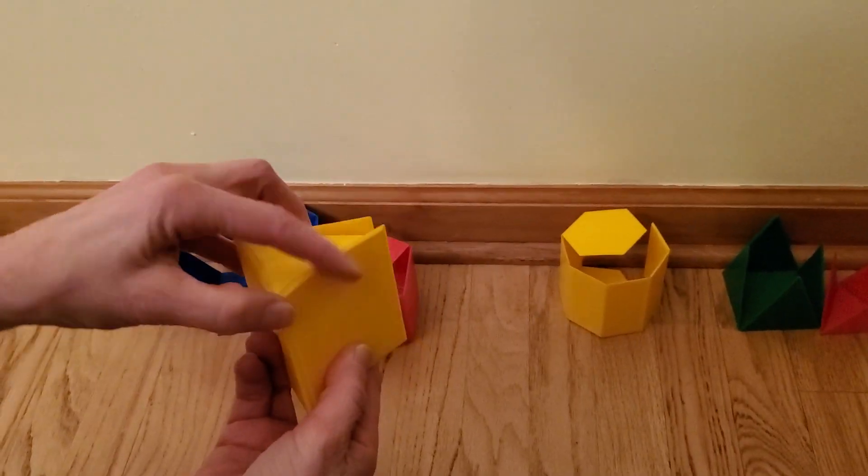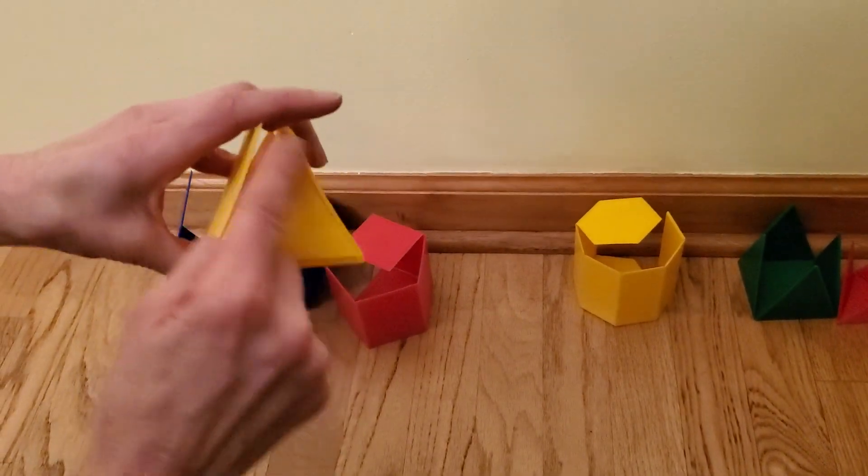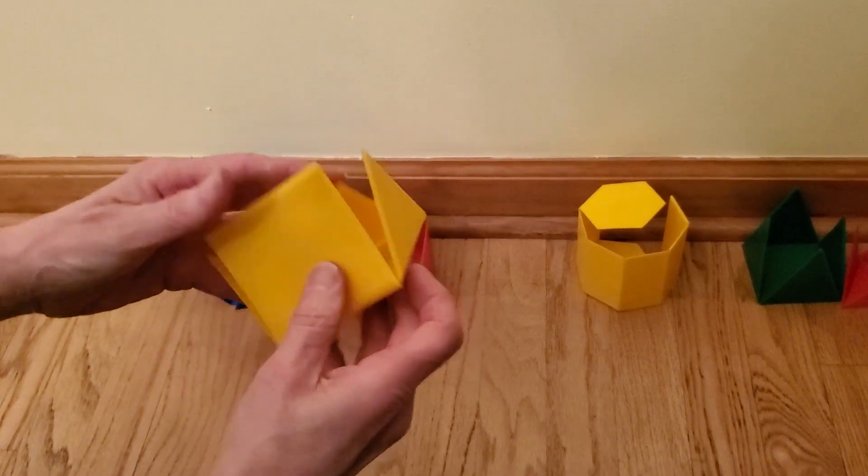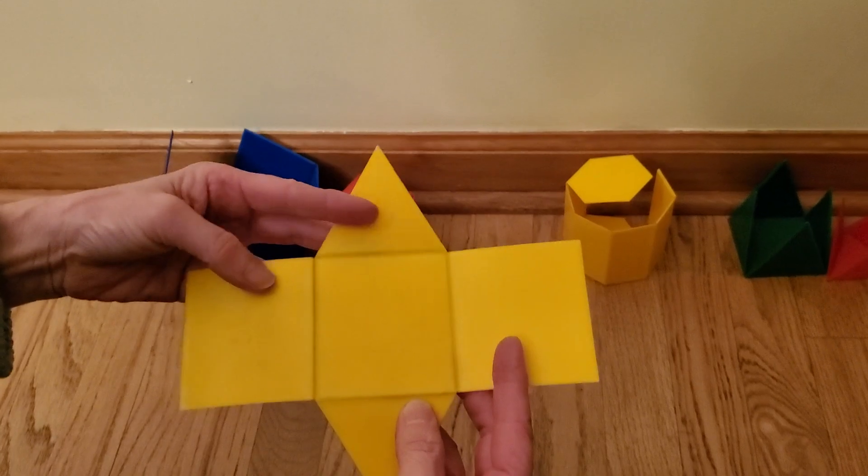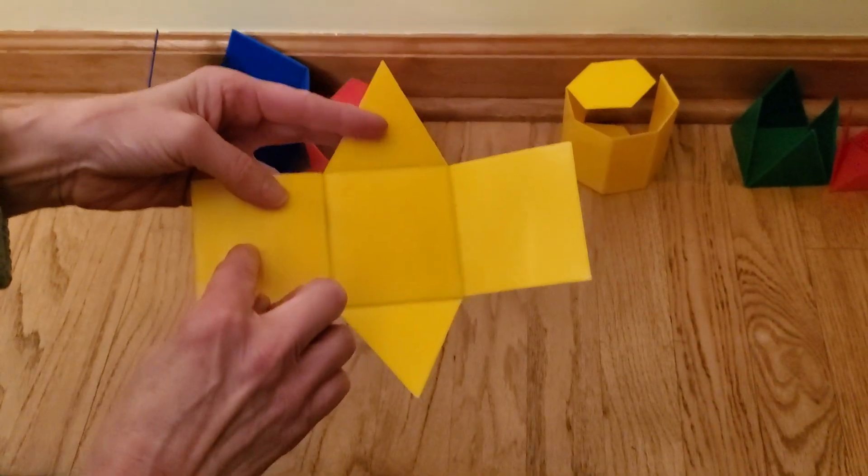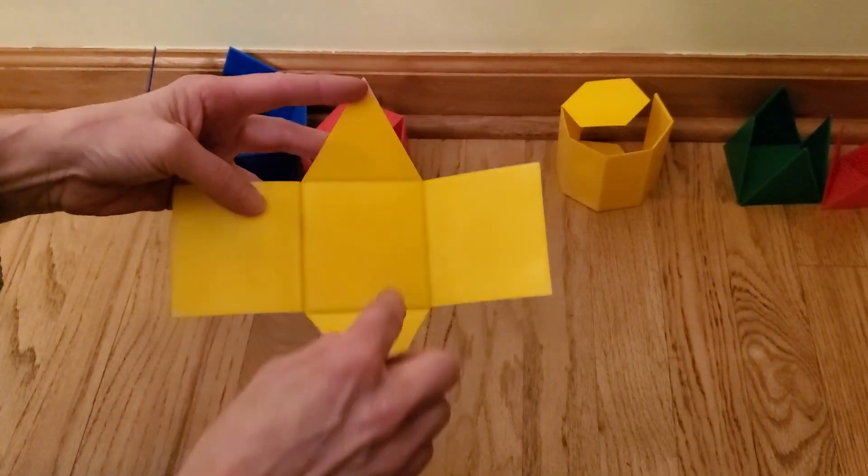For this prism, this is called a triangular prism. Again, it is mostly made up of rectangles. The net form of this prism has one, two, three rectangles and two triangles.